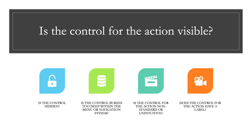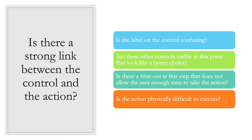For question three — is there a strong link between the control and the action? — the four sub-questions are: Is the label on the control confusing? Are there other controls visible at this point that look like a better choice? Is there a timeout at this step that does not allow the user enough time to take the action? And is the action physically difficult to execute? If you answer yes to any of these questions, there could be a usability issue that you need to identify and write down, so that when you're planning your usability test later on, you can test this.